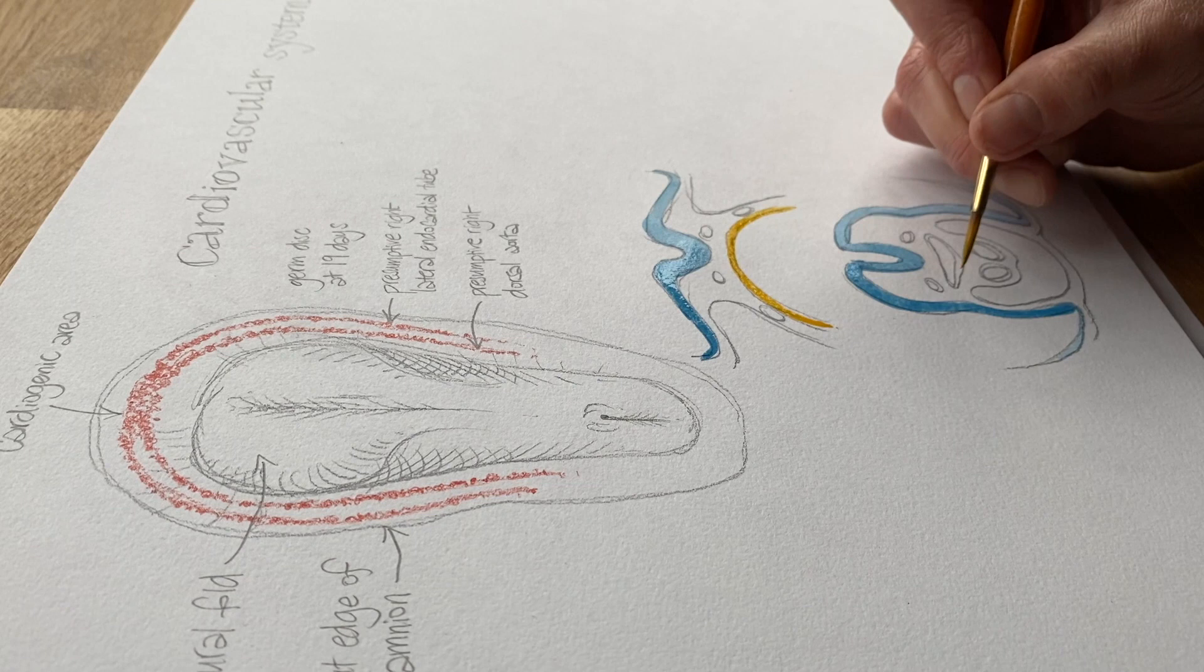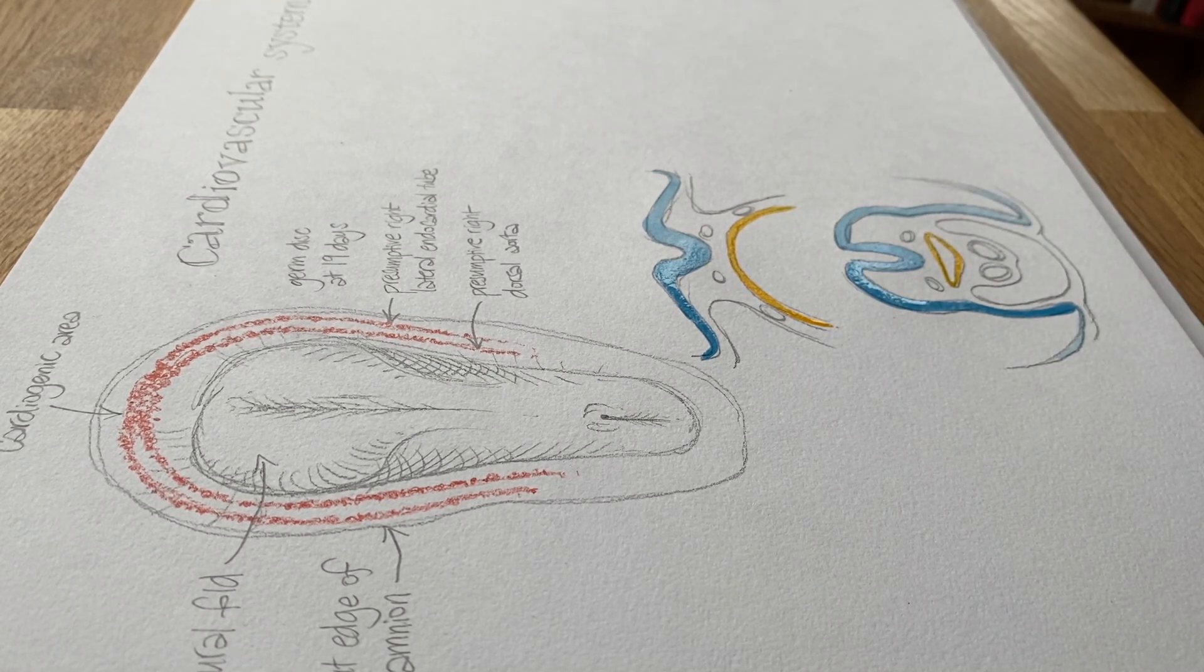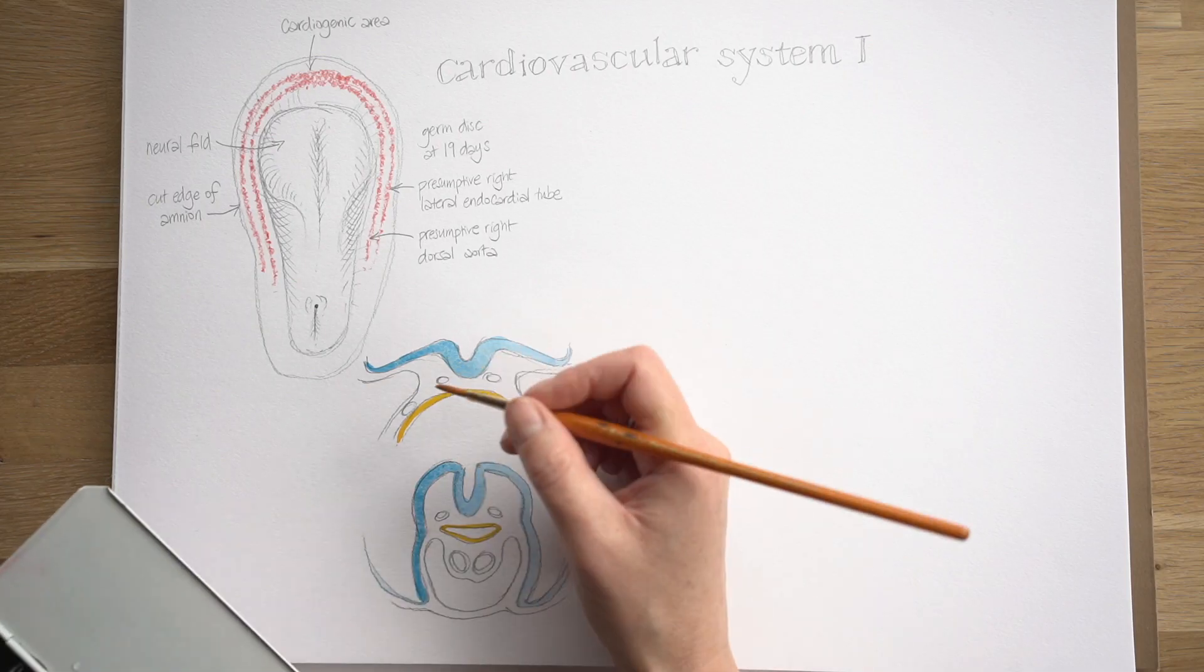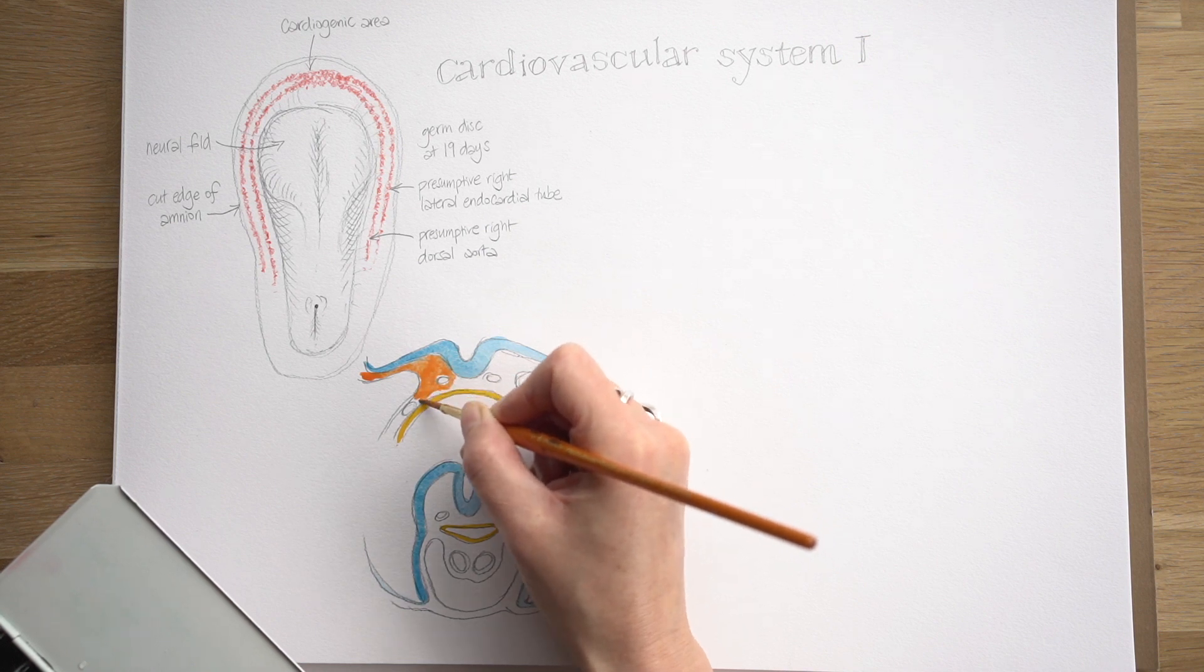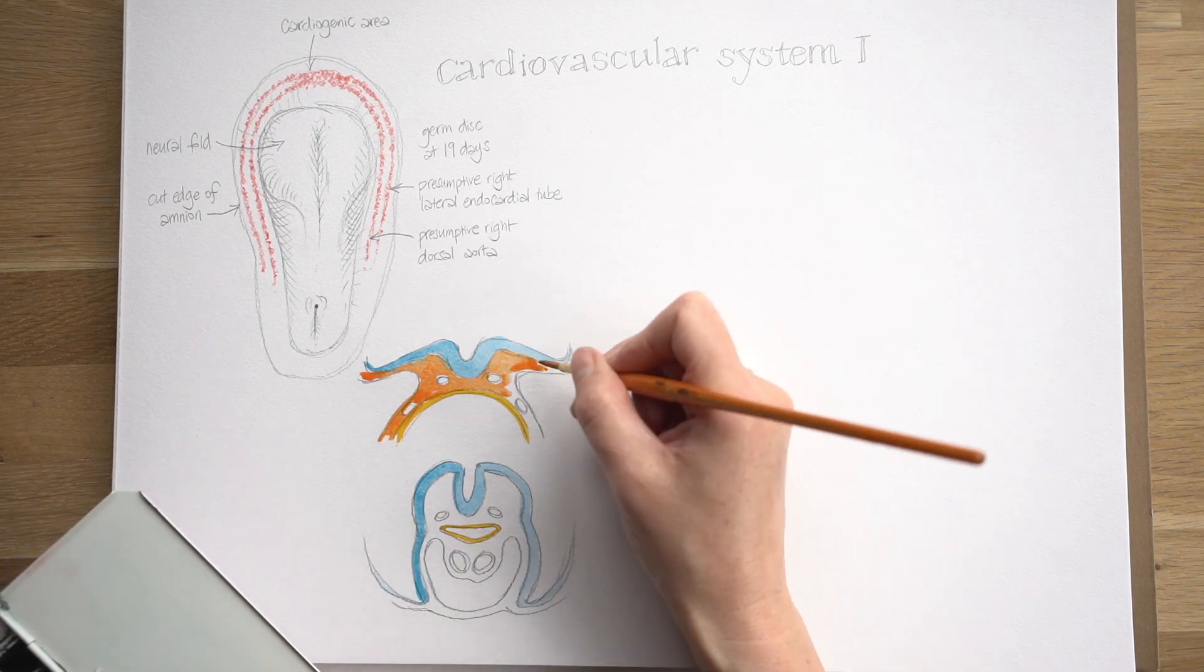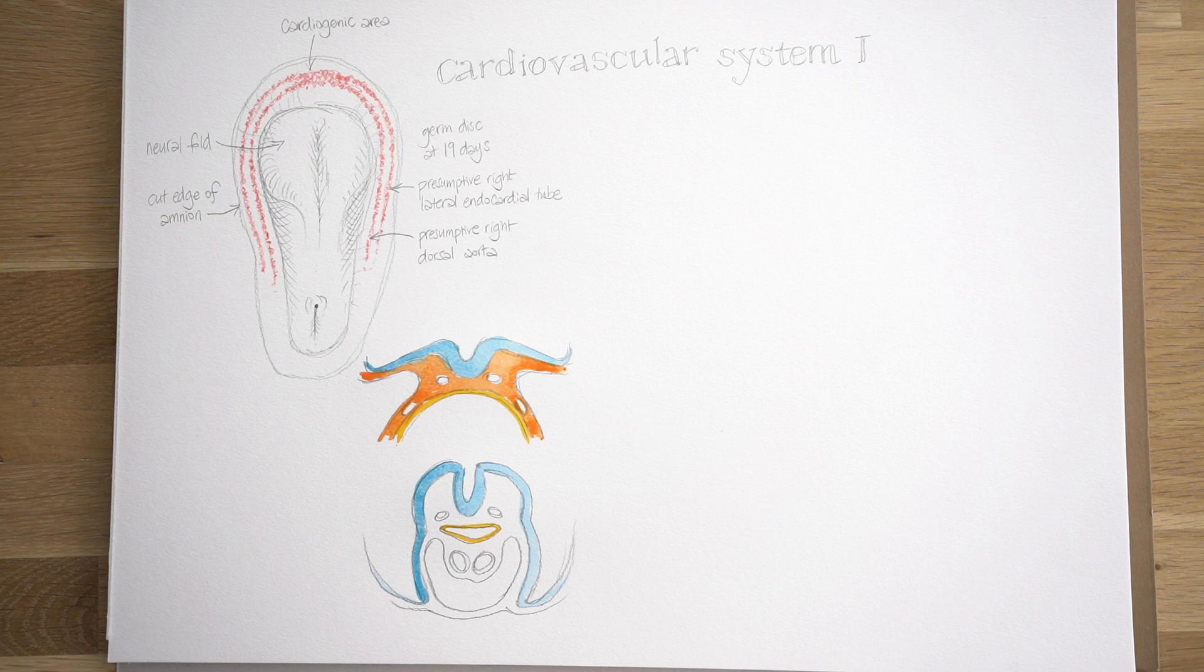And then yellow I reserve for the endoderm. That's the layer which was the lower layer of the trilaminar germ disc which ends up being the cylinder right in the middle of the embryo, the gut tube. Here's that orange going in and you can see there quite clearly that those endocardial tubes are in the orange up against the yellow of the endoderm. They're in that splanchnic layer of lateral plate mesoderm.